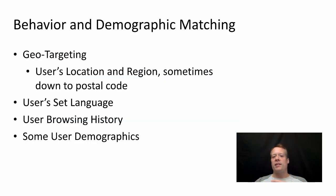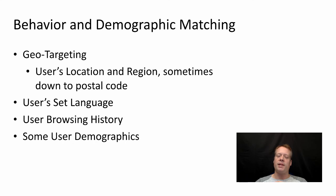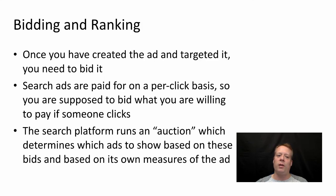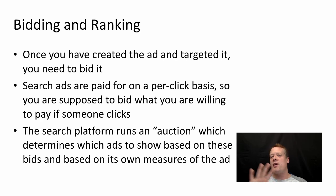Besides key phrases, you can also do behavioral and demographic matching. You can do geo-targeting — targeting users' location and region, sometimes down to the postal code. You can target their set language, their browsing history in some cases, and some user demographics. Once you put all that together, Google will consider your ad with those targeting rules, plus a bid, to determine how to place your ad.